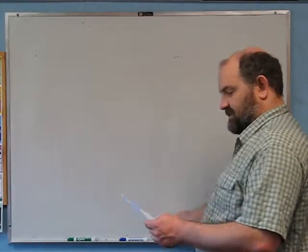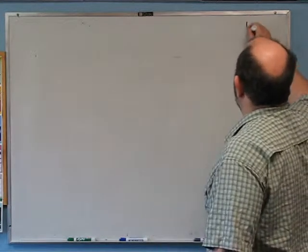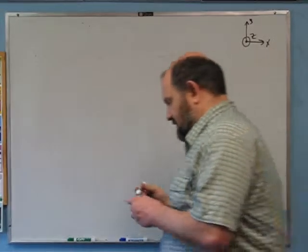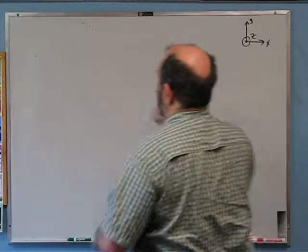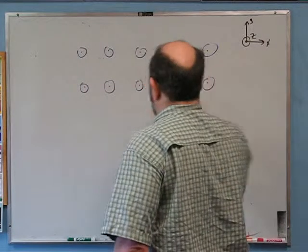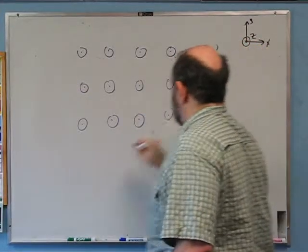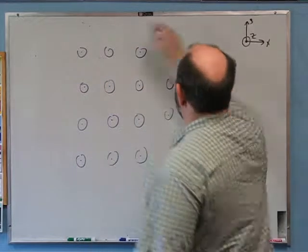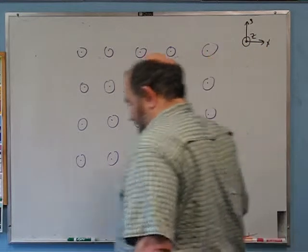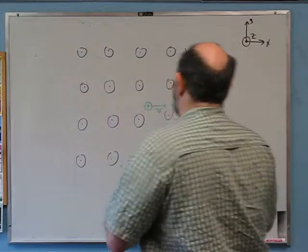Second problem: all of space contains a magnetic field in the plus z direction, and a positively charged particle is initially moving in the plus x direction. I set up axes: x, y, and z out of the board — a right-handed coordinate system since x cross y equals z. The magnetic field in the plus z direction is drawn as dots (arrows coming right at you). The particle starts moving in the plus x direction.